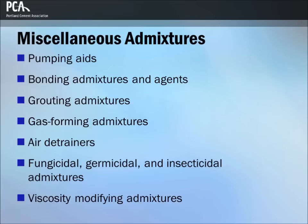Grouting admixtures alter the properties of grout for specific applications. Aluminum powder and other gas-forming materials are sometimes added to concrete and grout to cause an expansion of the mixture prior to hardening. Air detraining admixtures reduce the air content in concrete. Bacteria and fungal growth on concrete surfaces or in hardened concrete may be partially controlled through the use of fungicidal, germicidal, and insecticidal admixtures. Viscosity modifying admixtures increase the viscosity of the mixture resulting in increased thixotropy and resistance to segregation.